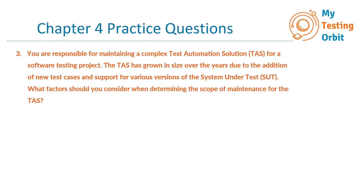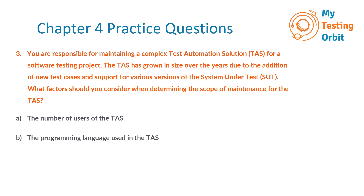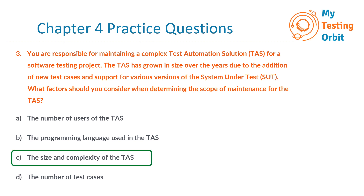Question number 3: You are responsible for maintaining a complex test automation solution. The TAS has grown in size over the years due to the addition of new test cases and support for various versions of the SUT. What factors should you consider when determining the scope of maintenance? The options are: A. The number of users of the TAS. B. The programming language used. C. The size and complexity of the TAS. D. The number of test cases. The correct option is C. The scope of maintenance depends on three factors: the size and complexity of the TAS, the size of the change, and the risk of the change. Hence, all other options are incorrect.